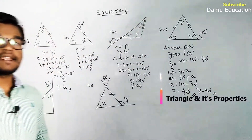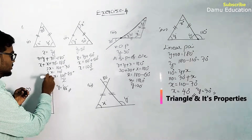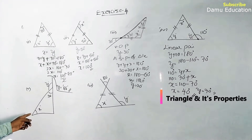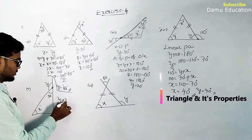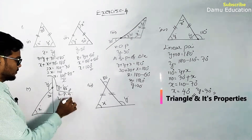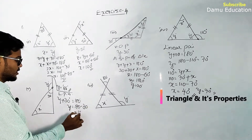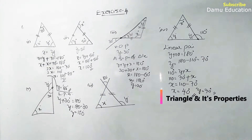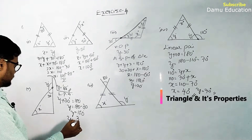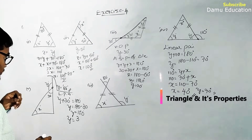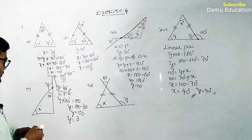For the fifth question, using the linear pair: y + 30 = 180°, so y = 180 - 30 = 150°. Now we need to find x. Using the exterior angle property, y equals x plus another angle z.